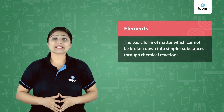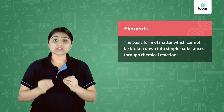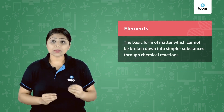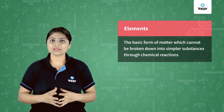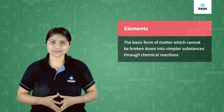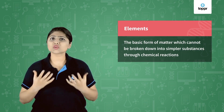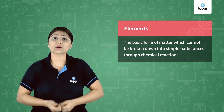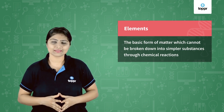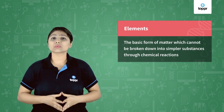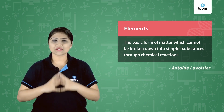An element is defined as the basic form of matter which cannot be broken down into simpler substances through any chemical reaction. That means if you want iron to be broken down into simpler substances, it is not possible because iron itself is the simplest substance. This definition was given by Antoine Lavoisier, a French chemist.